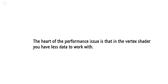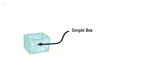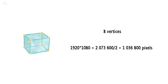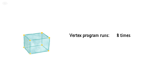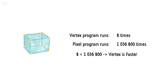The heart of the performance issue is simply that in the vertex shader you have less data to work with. Take a simple box with 8 vertices that covers the entire screen. On one side we have 8 vertices. On the other we have resolution width times resolution height, divided by 2 as the pixel shader always does things in pairs — giving us about a million pixels if the fragment program runs once per pixel. Doing operations on the vertex level means we run the program 8 times; on the pixel level we run it a million times.